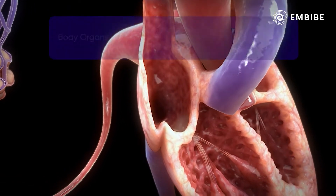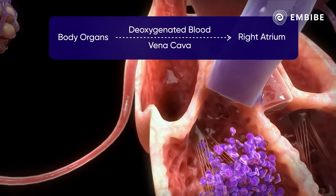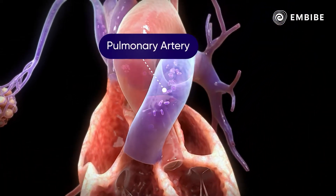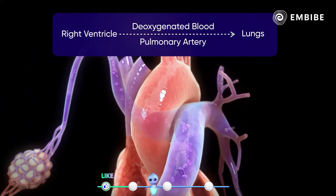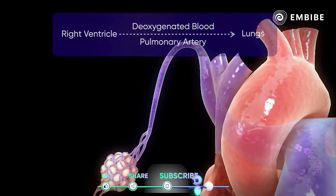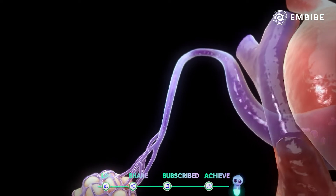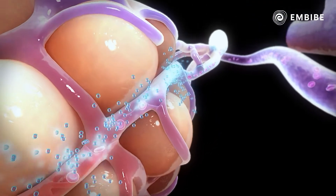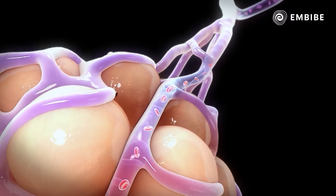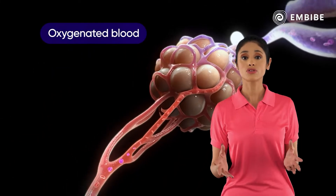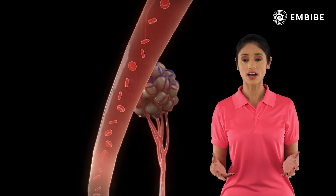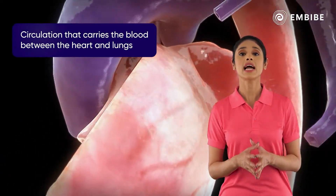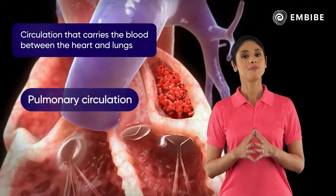The right and left atria pump blood into the right and left ventricles respectively. From the right ventricle arises a pulmonary artery, which carries deoxygenated blood to the lungs. In the lungs, the blood gives up carbon dioxide and takes in oxygen. The oxygenated blood then returns to the left atrium of the heart through the pulmonary veins. This part of the circulatory system where the blood is carried between the heart and lungs is called pulmonary circulation.